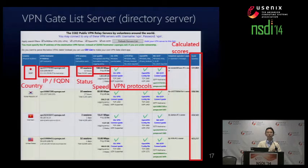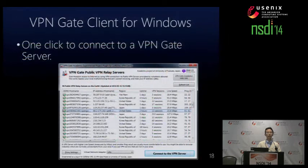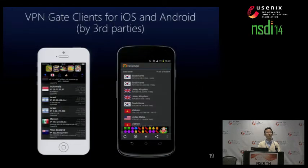However, that copy and paste is very troublesome. So we implemented a VPN Gate client specifically for Windows that allows users to connect to the VPN server with one click. We published a background API so any third parties can create VPN Gate clients — for example, for smartphones. They are already developed by third parties. The left is for iPhone and the right is for Android. Everyone can develop such software.